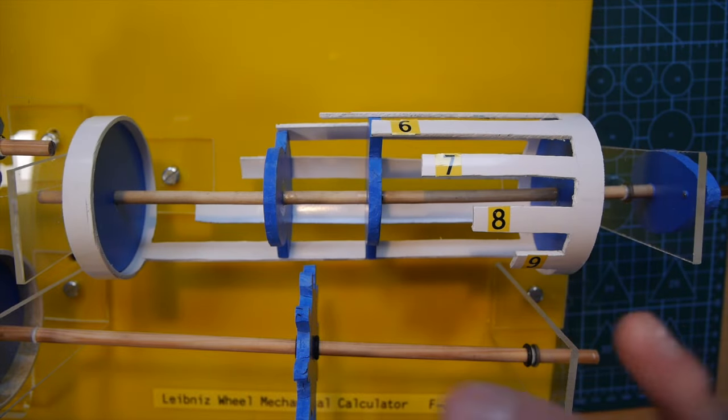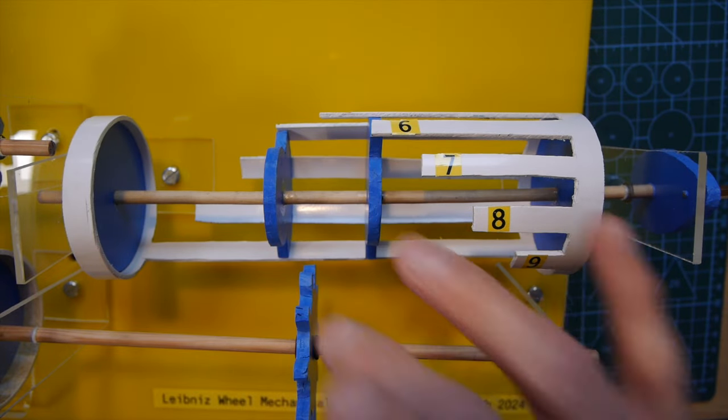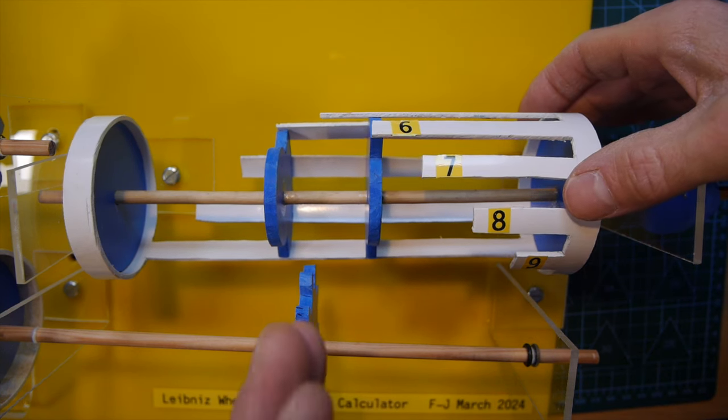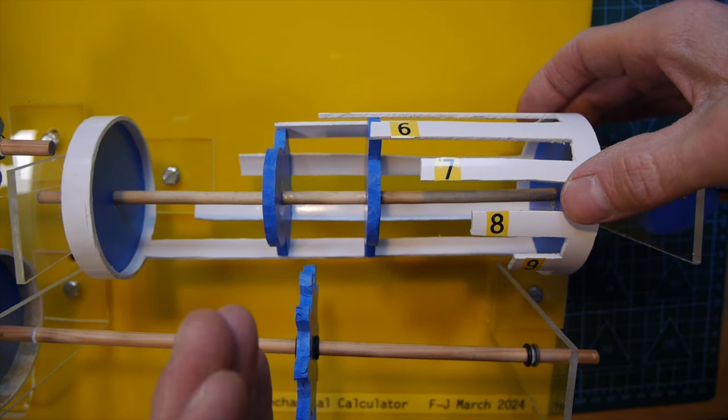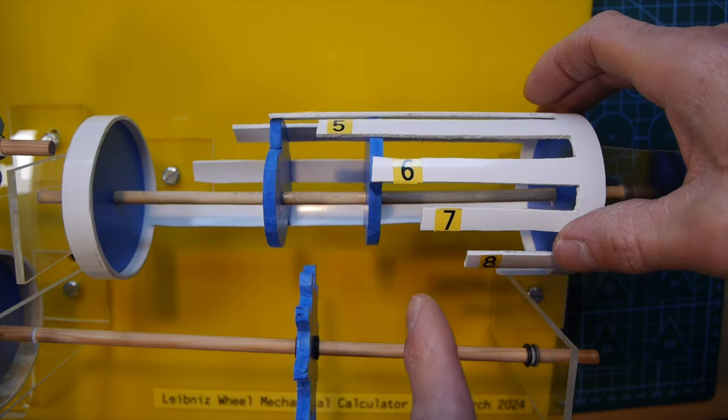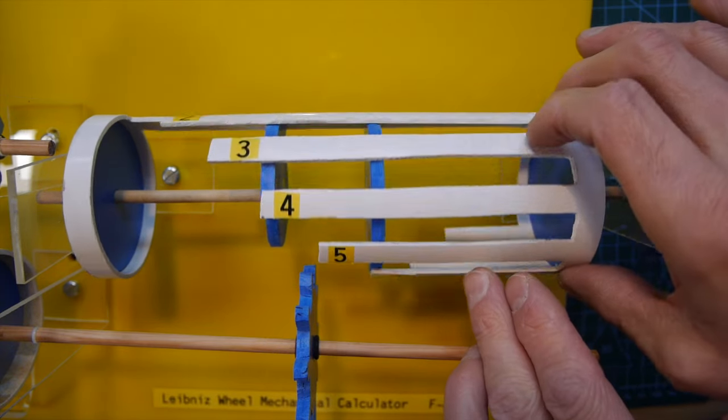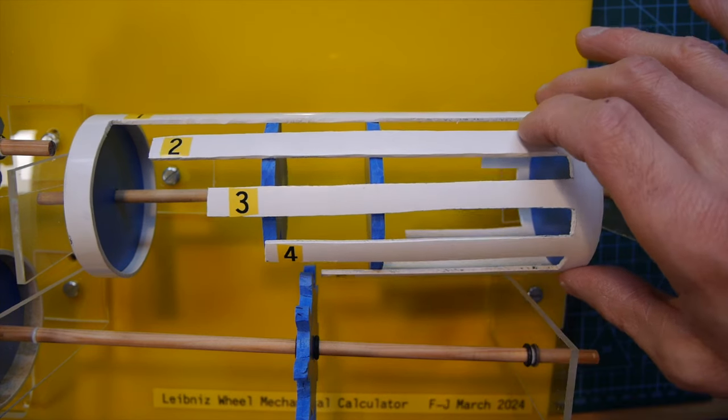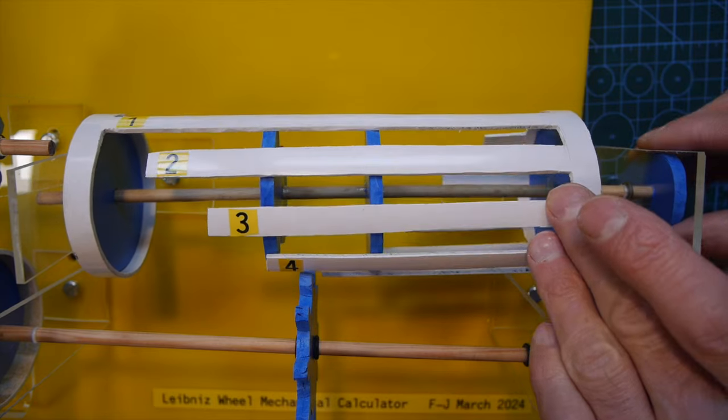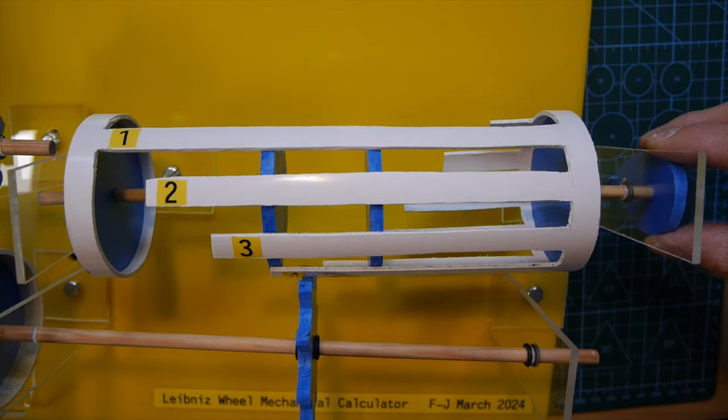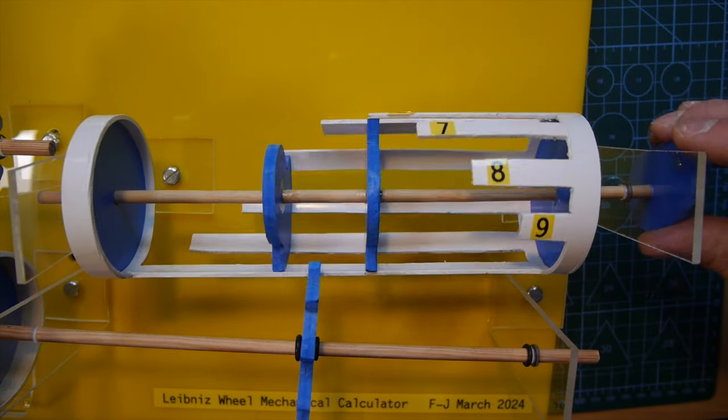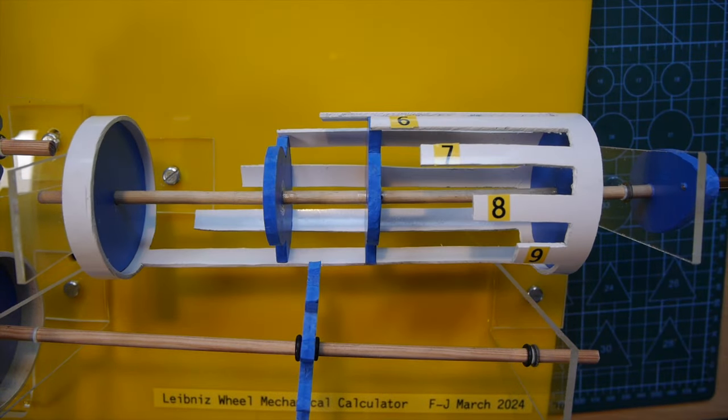That meshes with a counting gear here with ten teeth so the idea is if you slide this counting gear to different places it will mesh with different numbers of teeth. So currently it's lined up with the four and that means there's four teeth here so if I turn the wheel the counting gear will turn one two three and four teeth further on. So I've entered four into the system.